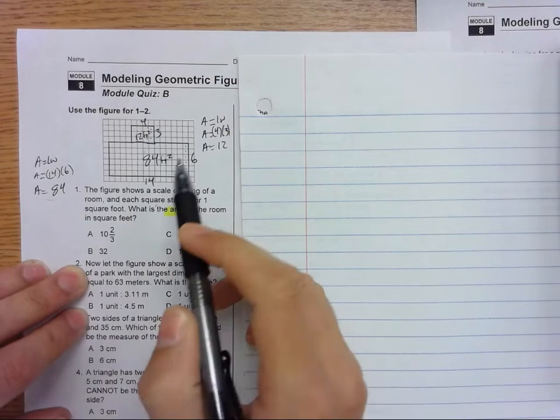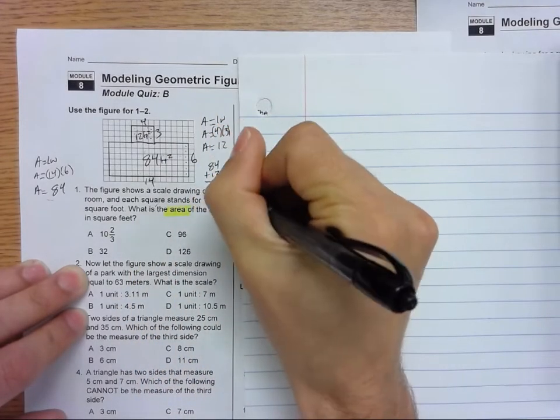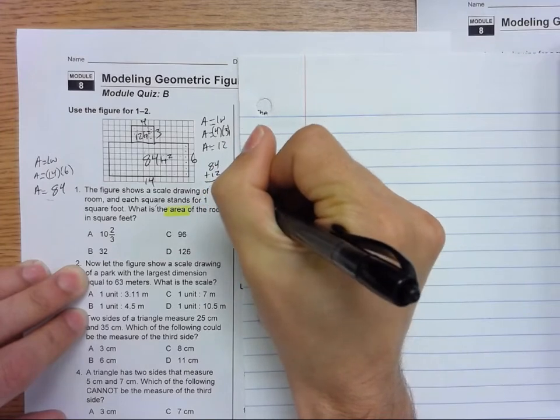So 12 square feet and 84 square feet is the area of the whole room. So we take this area and add this area, so 84 plus 12, and we get 96 square feet.